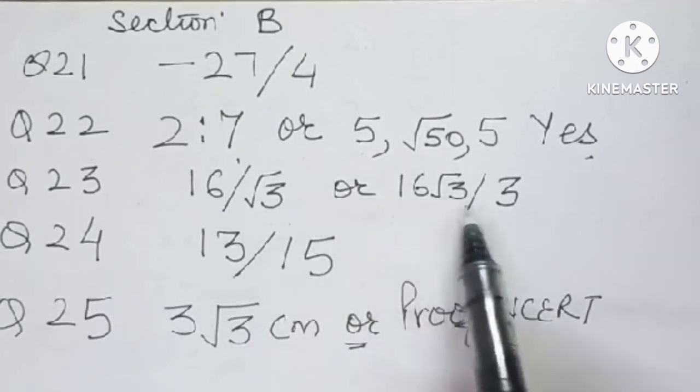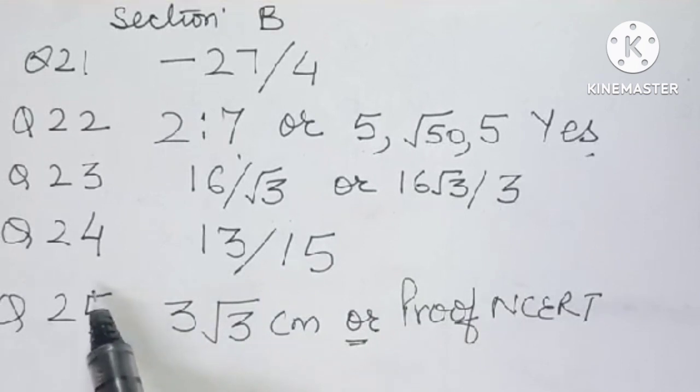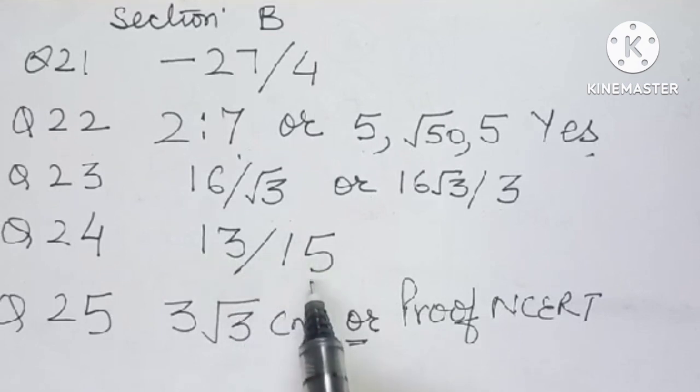Question number 24 is 13 by 15. Question number 25 is 3 root 3 centimeter, and its or part is proof of NCRT. Got it?